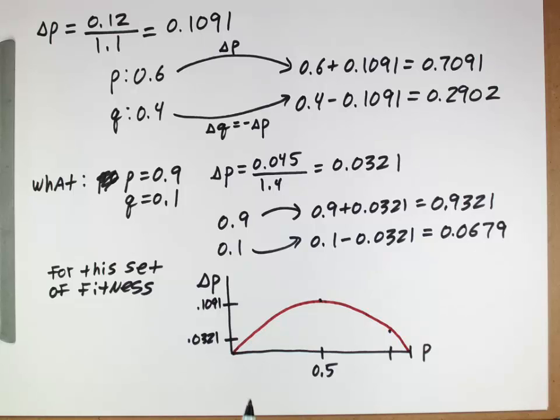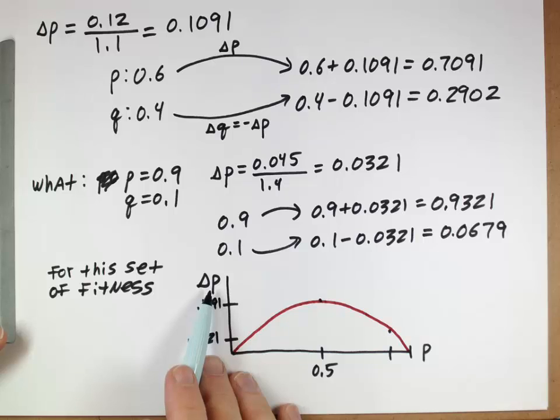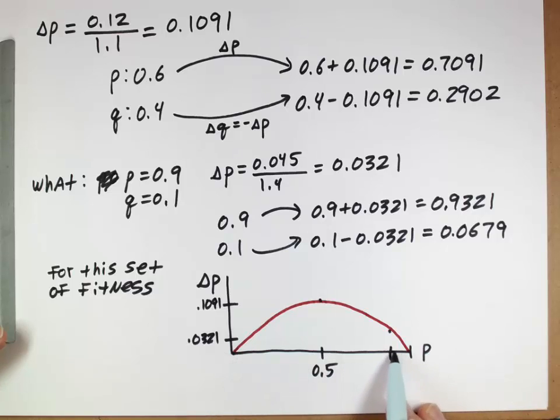Telling us that delta p, this is kind of like our rate of evolution, the change in the frequency, is the highest when the frequency is at 0.5, and it's the lowest when the frequency is low or when the frequency is high.